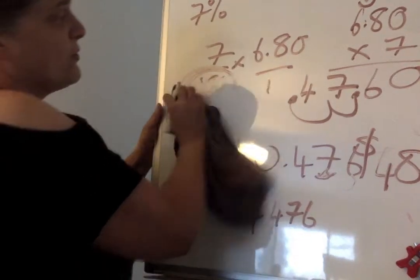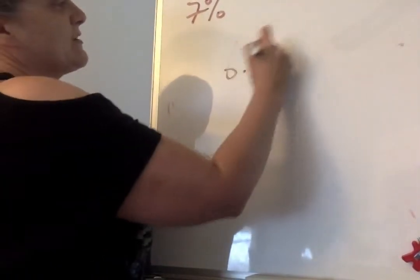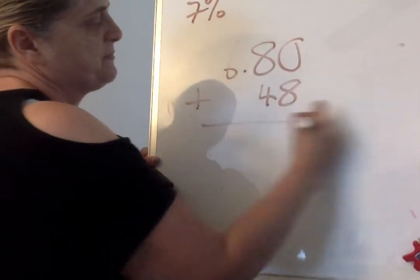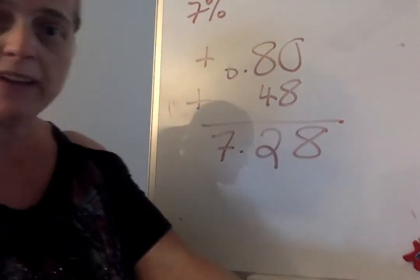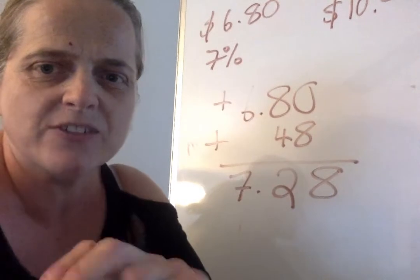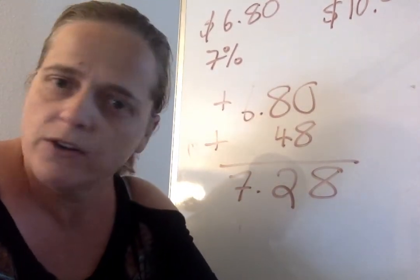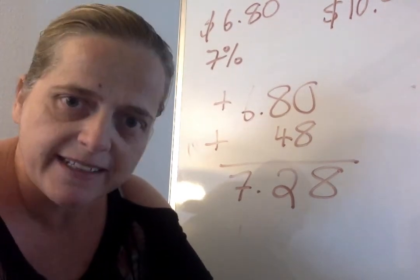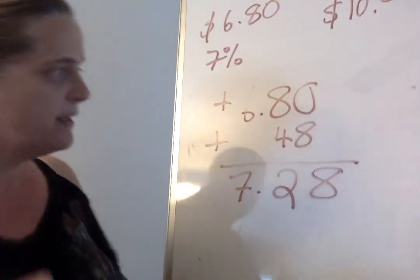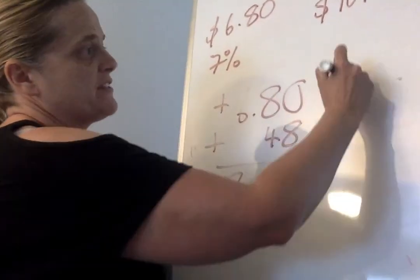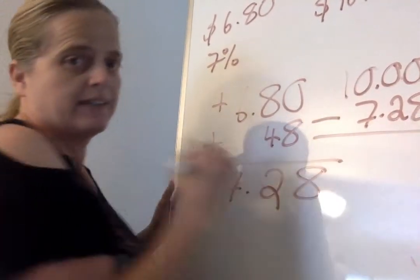So now we're going to take the $6.80 and add 48 cents to it. $6.80, add 48 cents. $7.28. And you better believe that's on there as an A, B, C, D answer. But that is not the question. It was not what is the total price of the sandwich that Jubilee got. No. The actual question is how much money will Jubilee get back if she pays with a $10 bill? So when I only have to do the math of $10, subtract $7.28, right?